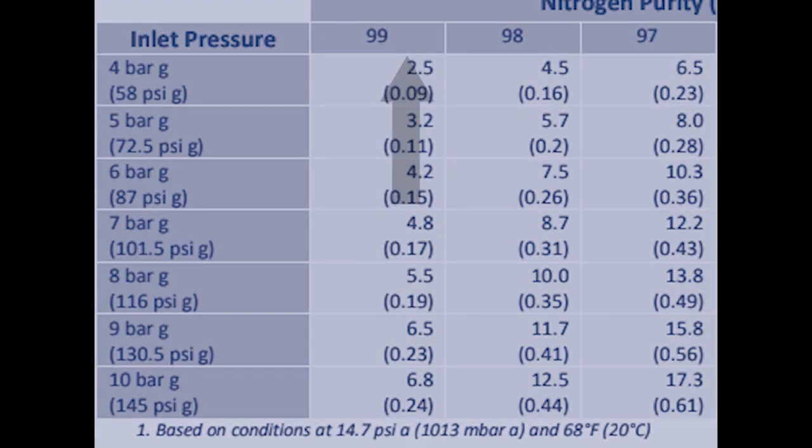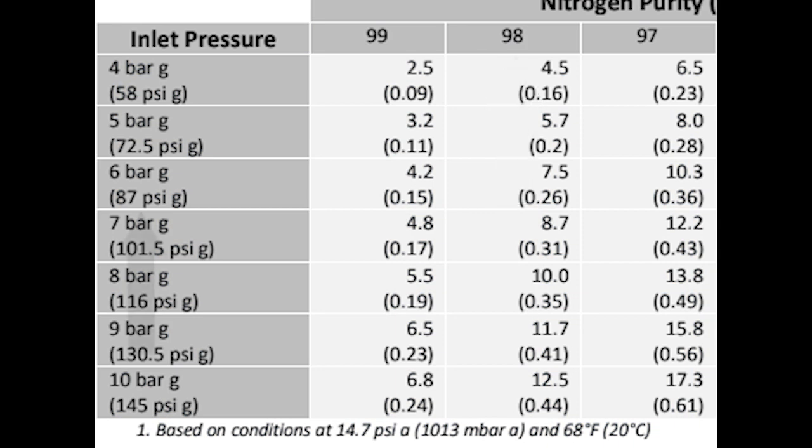For example, if your application requires 98% purity, you would need to set the generator to 87 psi at 7.5 liters per minute.